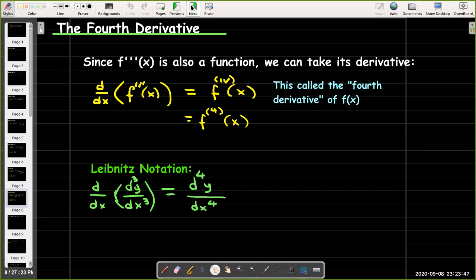If we wanted to go to a higher order derivative, we run out of primes. We usually don't put f quadruple prime, though some people do. We just start putting the order of the derivative as a superscript in parentheses. This is how we would write the fourth derivative of f(x).